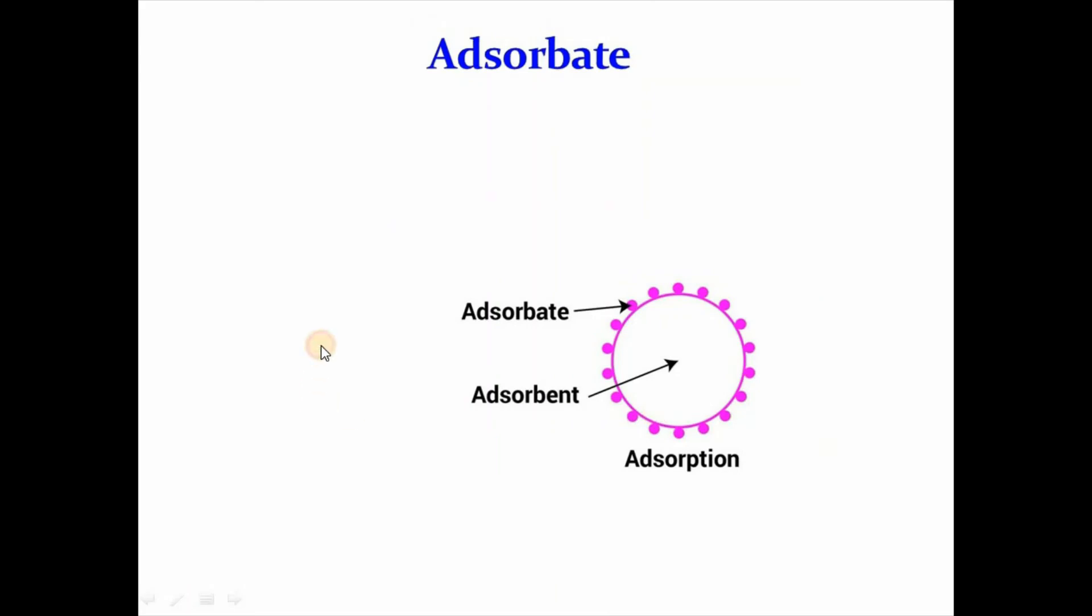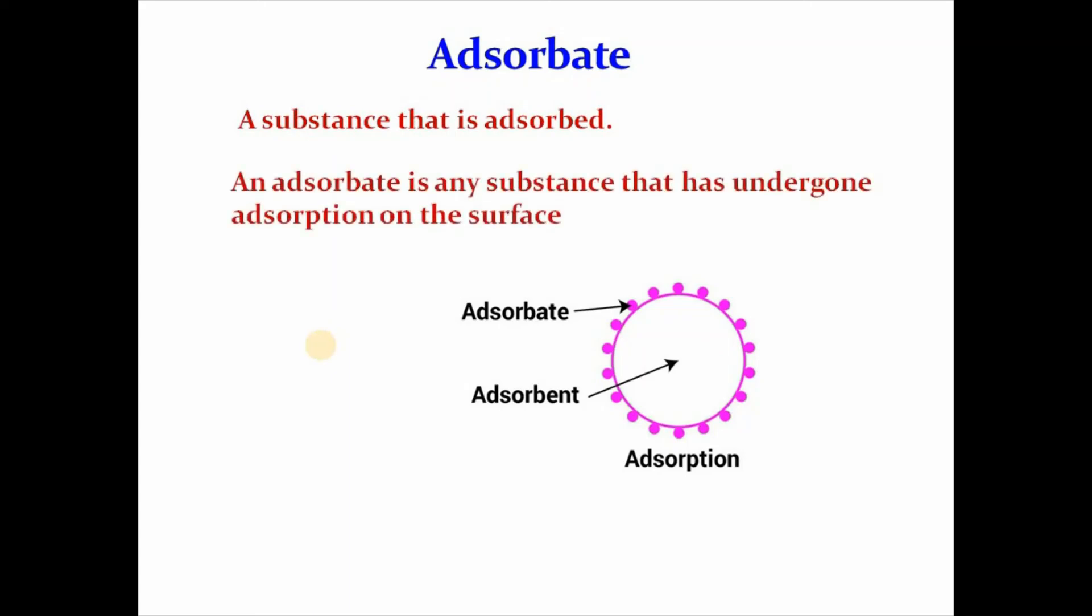Finally, adsorbate. A substance that is adsorbed. An adsorbate is any substance that has undergone adsorption on the surface. And typical pollutants are considered as adsorbate. Examples include heavy metal ions like hexavalent chromium, organic dyes, phosphate, arsenic. Typical examples of adsorbate.